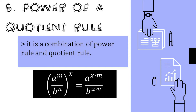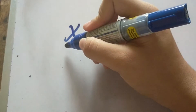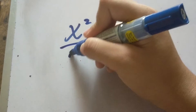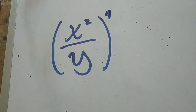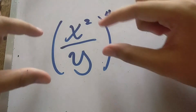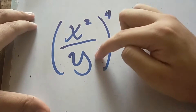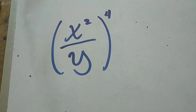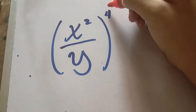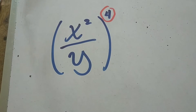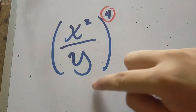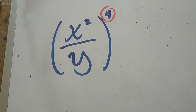Let's have an example. We have x raised to 2 over y, and they are all raised to 4. For the power of a quotient rule, the operation between the two variables must be division. What we are going to do is distribute the exponent of this group to each variable to simplify.